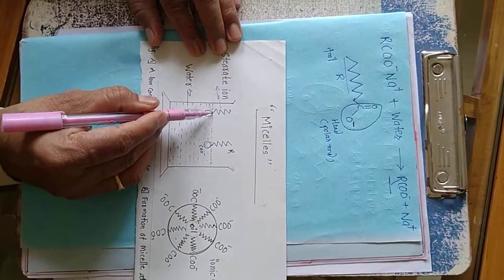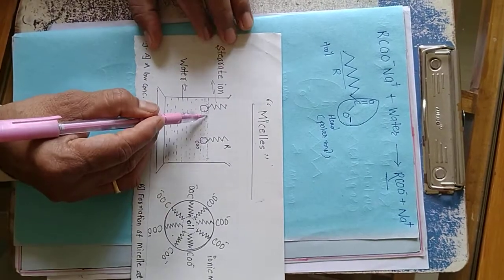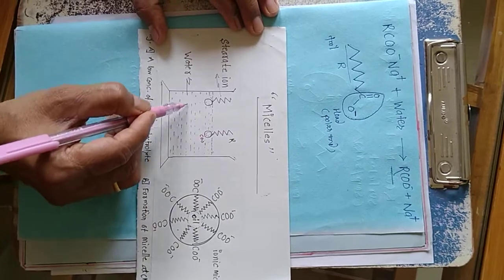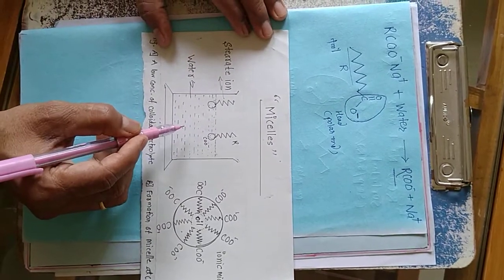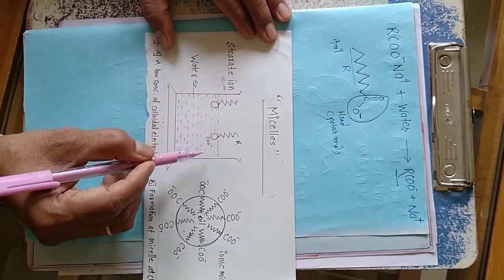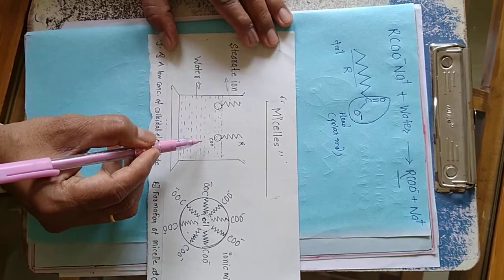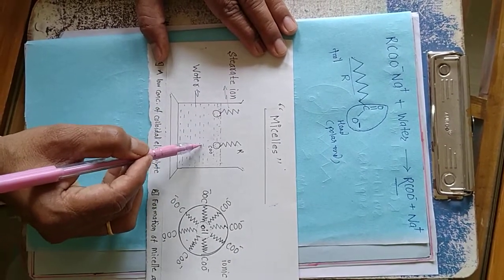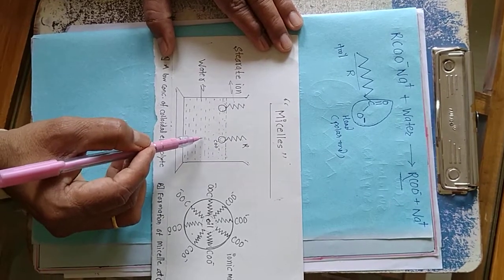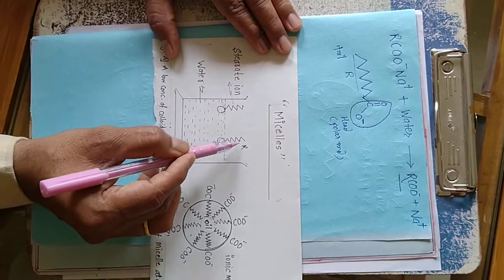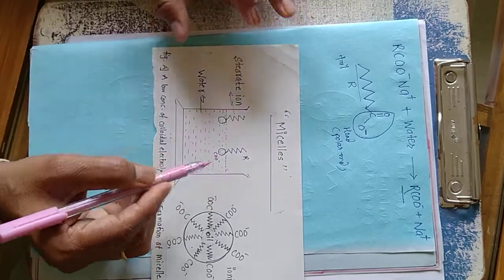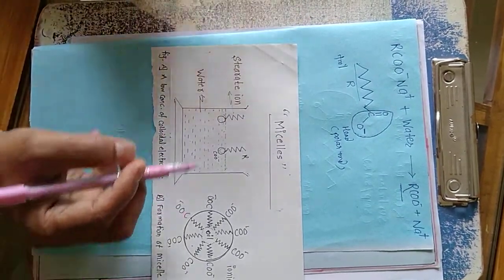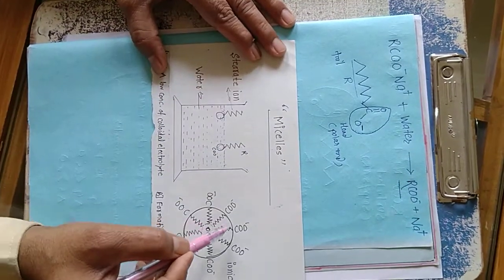At low concentration, these ions stay at the surface and the solution behaves as a true solution or strong electrolyte solution. But when the concentration of the soap increases, the ions have a tendency to bind with each other and aggregate or associate together.